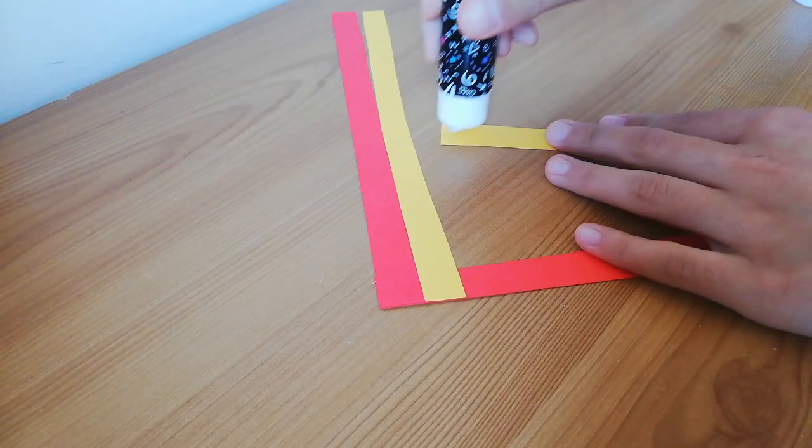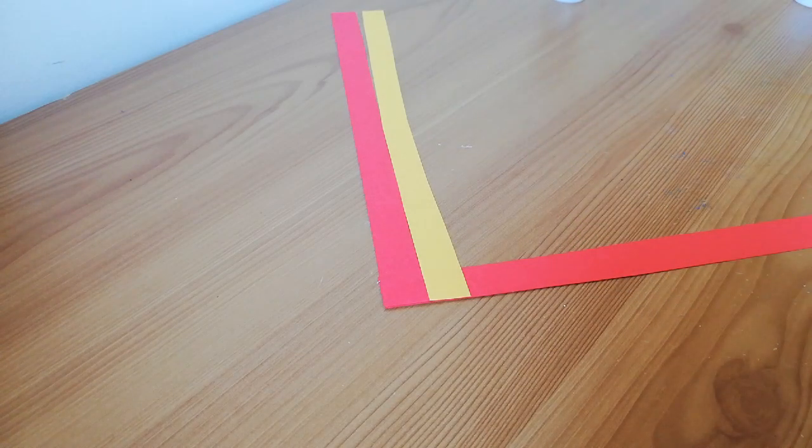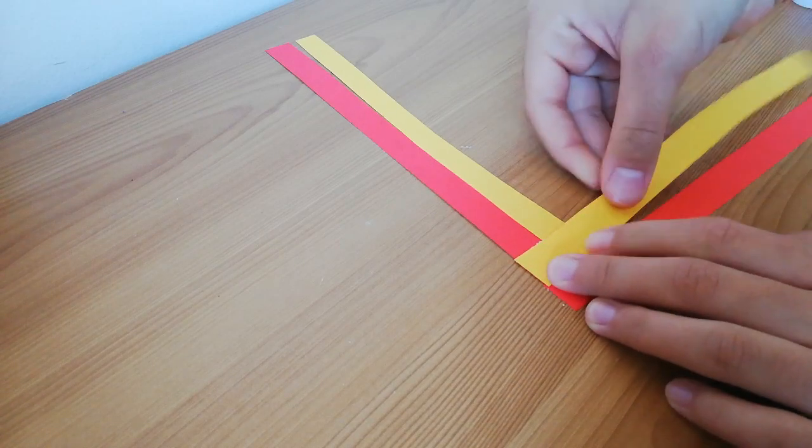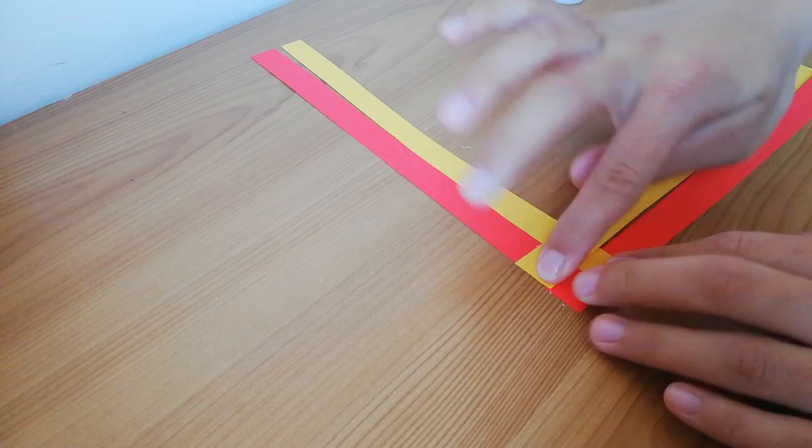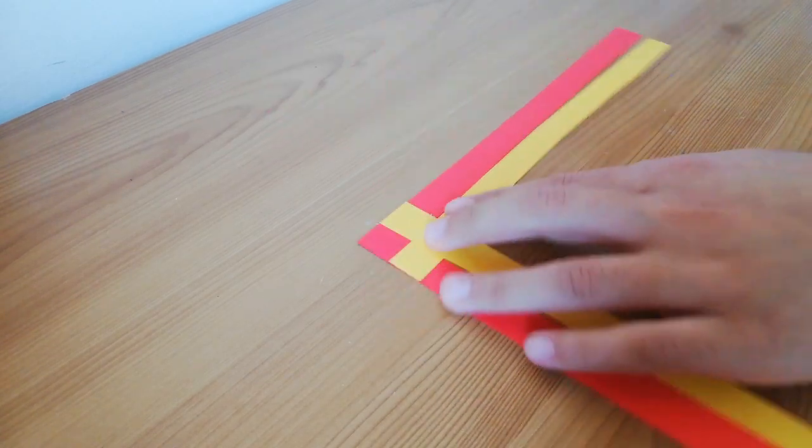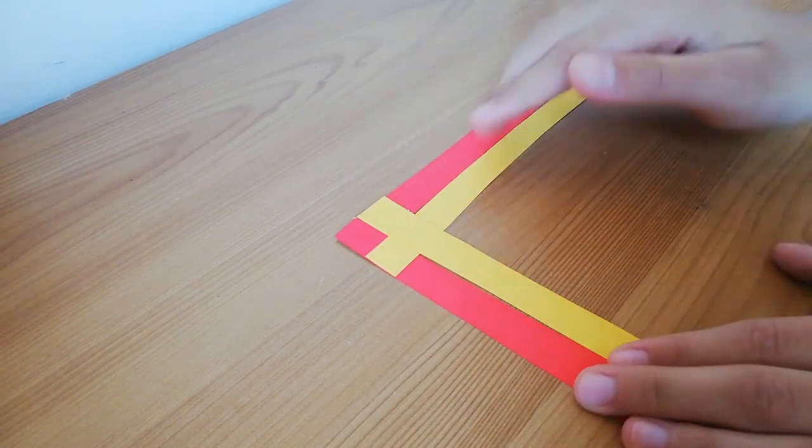So now we need to take the other color strip, which should be the last strip you have, and glue it right on the top of the strips. But it needs to align with the bottom red strip, so the top is yellow and the bottom is red, but they align next to each other and it makes a corner of a square. It has like a yellow cross and then the red line underneath.